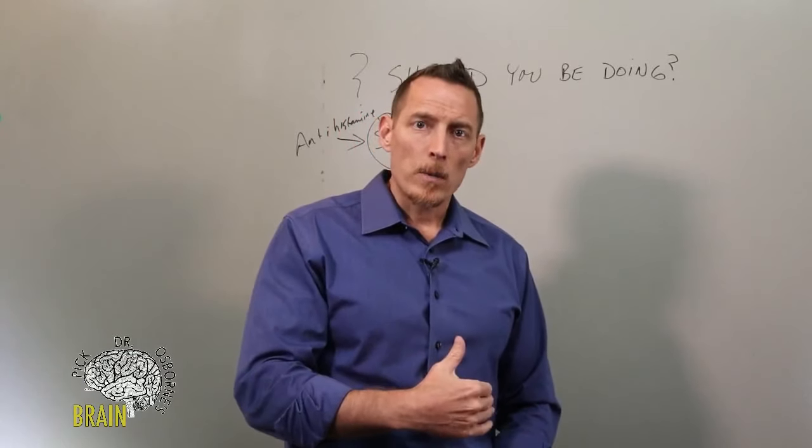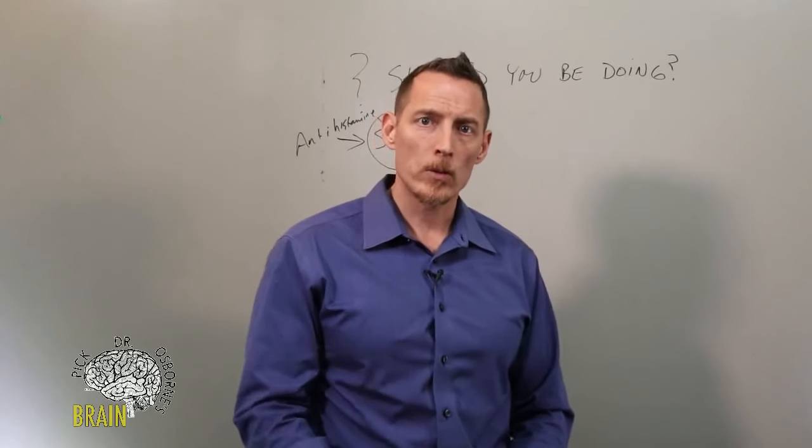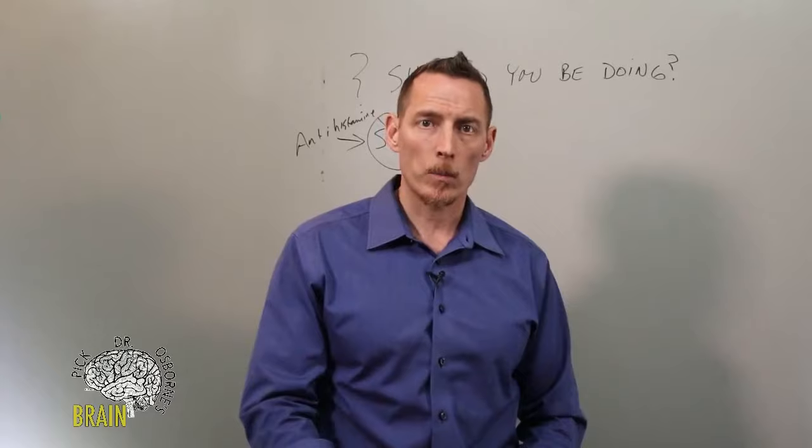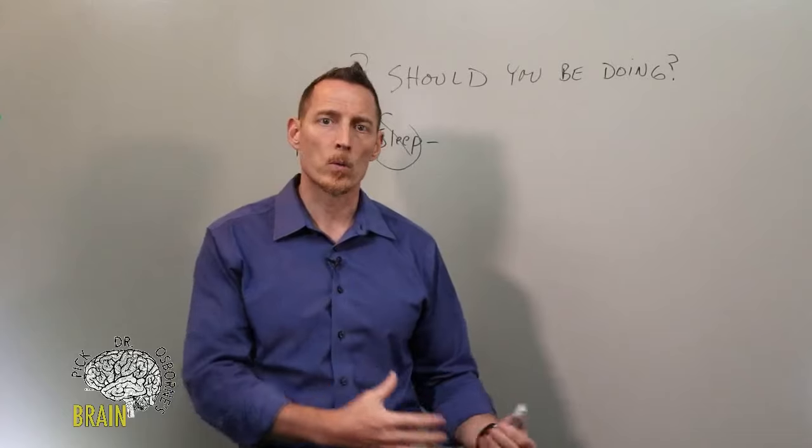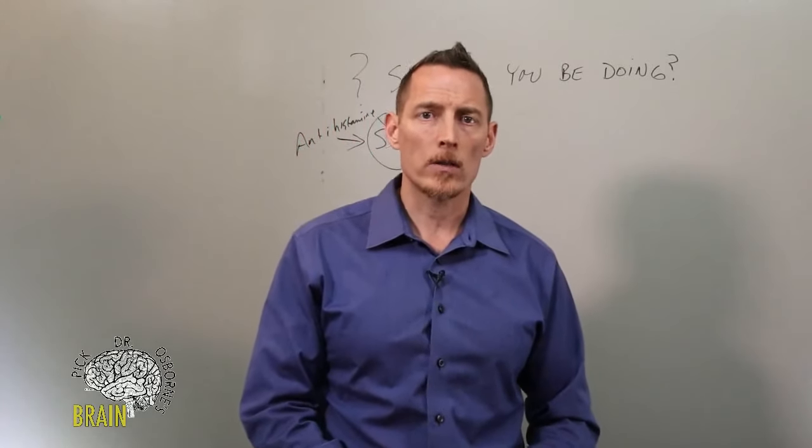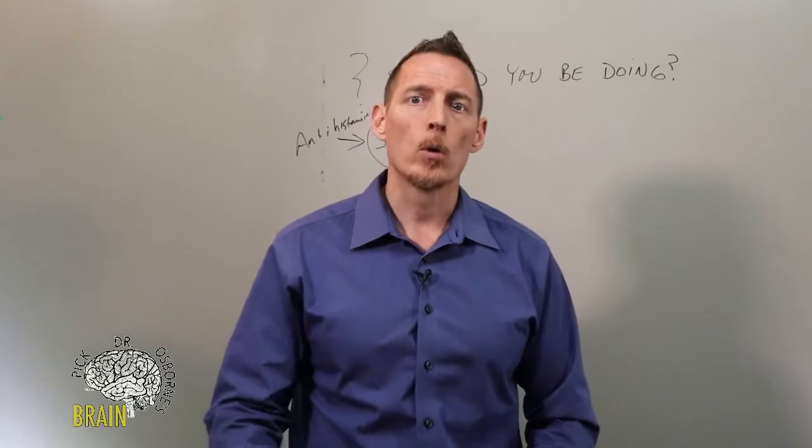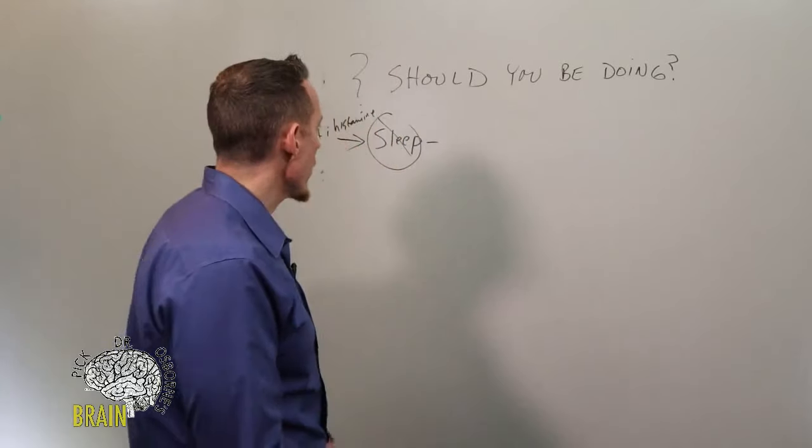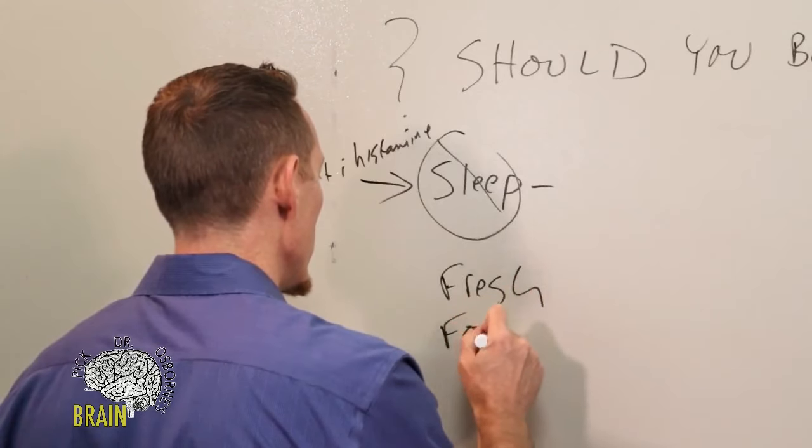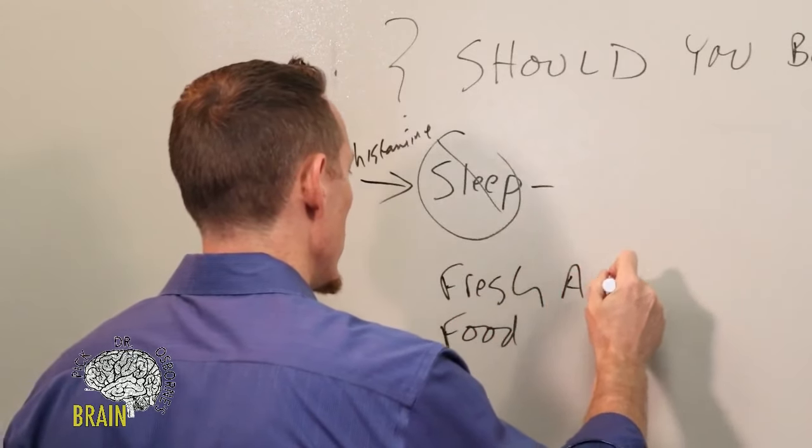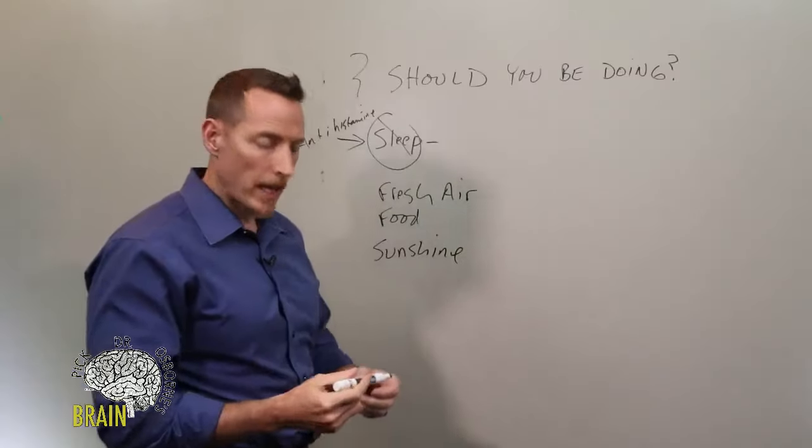Other things you need to be focused on, we've talked about eating real food. You need to focus on eating real food. You need to be focusing on sunshine where applicable, where you can get it. Some of you are further north. It's harder to come by. But you need to be focused on it to the extent that you can get it. In other words, get as much as you can to the toleration that your skin will not get a sunburn. Fresh air. Fresh air, food, sleep, sunshine are all critical factors that you can't ignore.